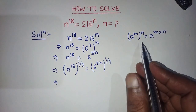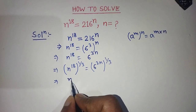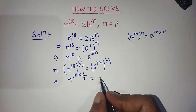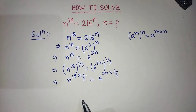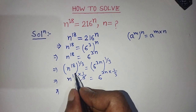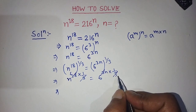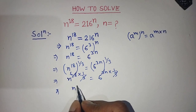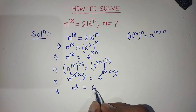Again we apply the formula on both sides. On the left hand side we write n to the power 18 into 1 by 3, is equal to on the right hand side 6 to the power 3n into 1 by 3. If you divide 18 by 3, we get 6. And we cancel 3 from numerator and denominator on the right hand side. After that, on the left hand side we write n to the power 6, is equal to 6 to the power n.